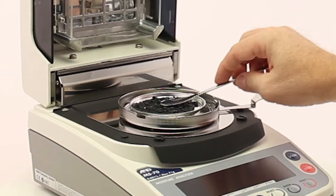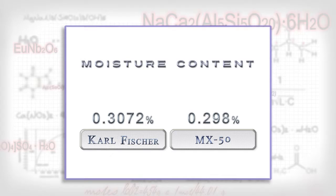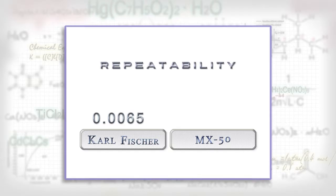A&D analyzers use the thermo-gravimetric or loss on drying principle and offer the accuracy of the Carl Fischer technique, but in less time and with better repeatability.